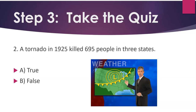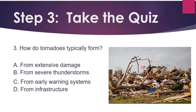Number 2: A tornado in 1925 killed 695 people in three states. Number 3: How do tornadoes typically form? From extensive damage, from severe thunderstorms, from early warning systems, from infrastructure?